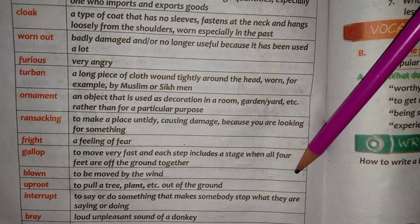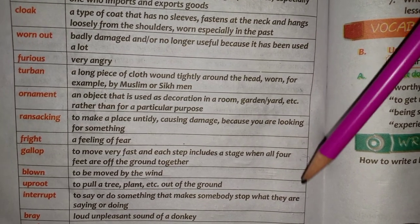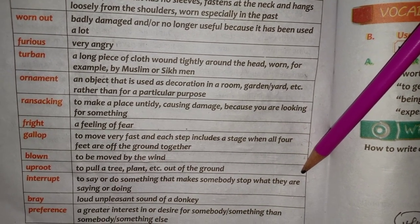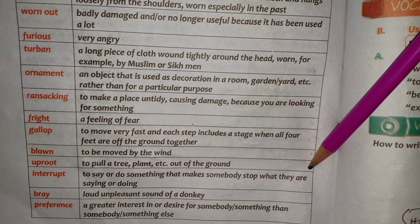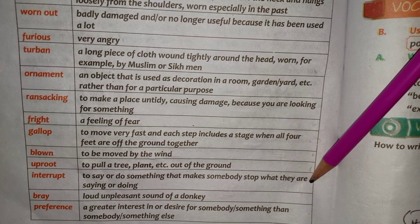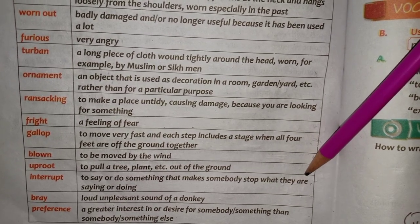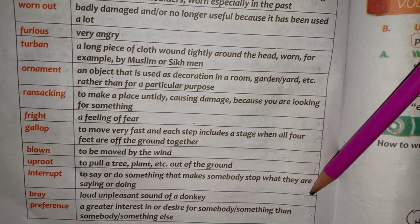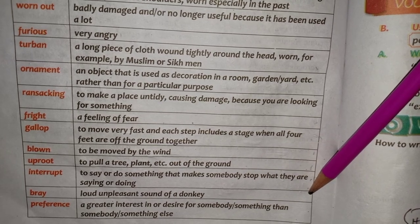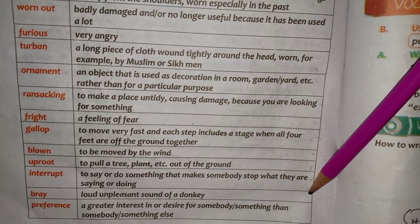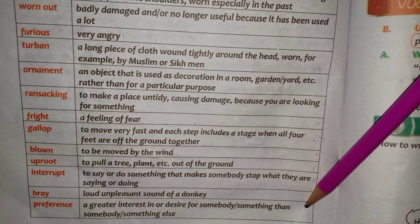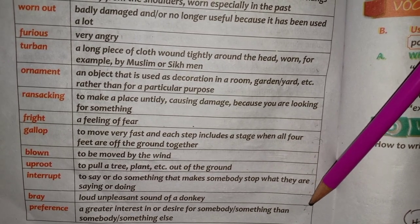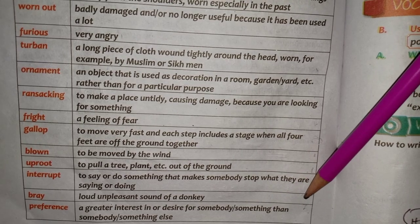Blown (Hawa ki wajah se ghasit jana) — to be moved by the wind. Uproot (Jad se ukarna) — to pull a tree, plant, etc. out of the ground. Interrupt (Madakhlat karna) — to say or do something that makes somebody stop what they are saying or doing. Bray (Ringkna) — the loud unpleasant sound of a donkey. And the last one, Preference (Fawkiyat, Ehmiyat dena) — a greater interest in or desire for somebody or something than somebody or something else.